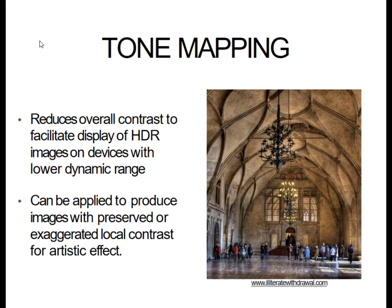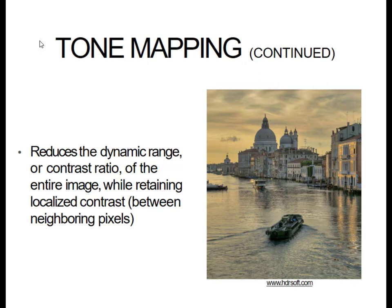So how does this all work? This leads us into a discussion about tone mapping. Tone mapping overall reduces the overall contrast to facilitate the display of HDR images on a device with lower dynamic range. This can be applied to produce images which preserve or exaggerate local contrast for an artistic effect. In one sentence, it's the process of creating HDR imagery and creating the proper tones in an image to get that high dynamic range. It reduces the dynamic range or contrast ratio of the entire image while retaining the localized contrast.